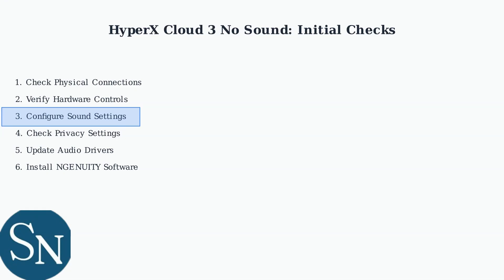This often resolves intermittent connection issues. In Windows Sound Settings, enabling loudness equalization can help normalize audio levels. Go to your headset properties, select the Enhancements tab, and check Loudness Equalization.